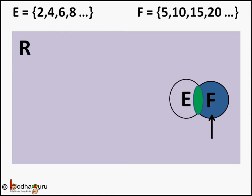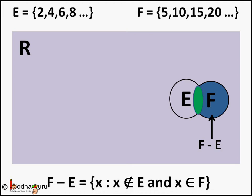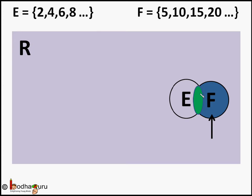Same way F minus E set has those elements of F which are not in E. Means we take out the common part that is E intersection F from the set F and whatever is left is F minus E. So F minus E has those elements which belongs to F but not in E.